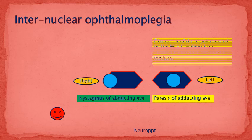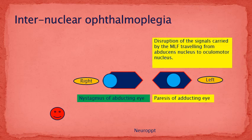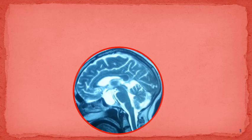The paresis of the adducting eye is most likely due to disruption of signals carried in the MLF from the abducens nucleus to the oculomotor nucleus. Now look at this diagram. This is the topographic location of the 3rd nerve nucleus, this is the topographic location of the 6th nerve nucleus at the lower pons, and this is the location of the medial longitudinal fasciculus.